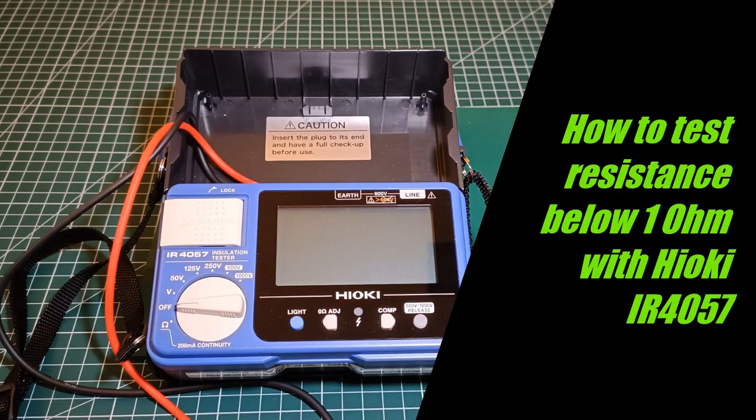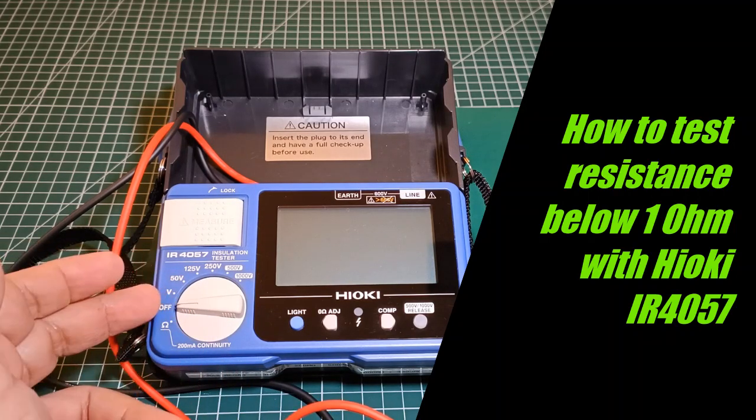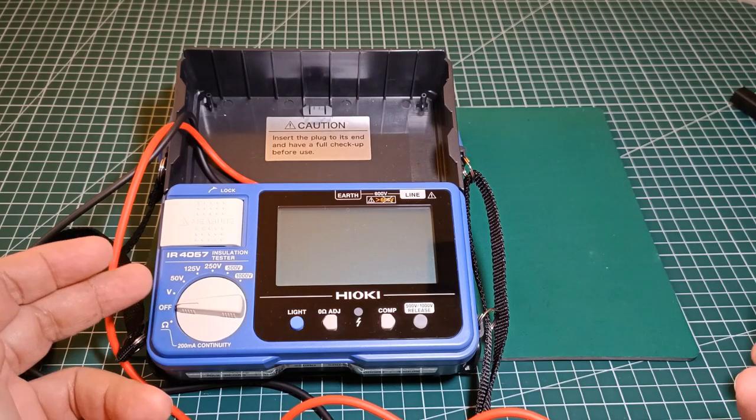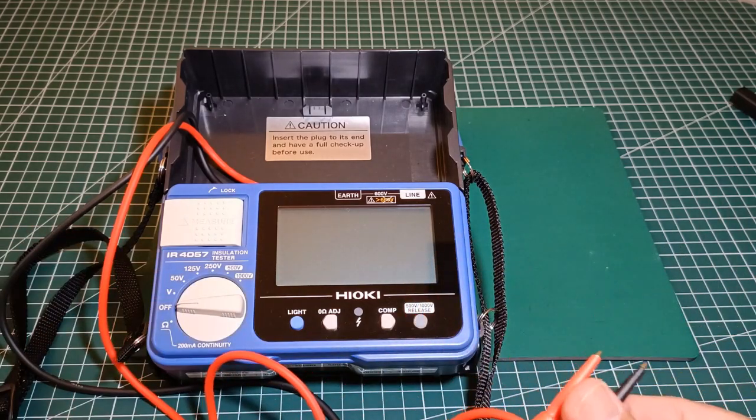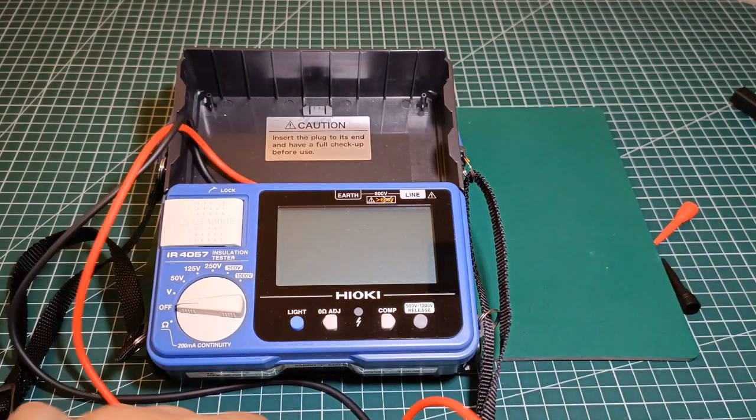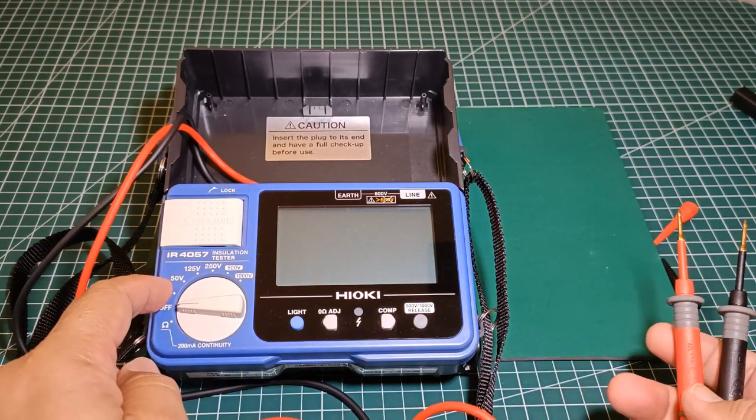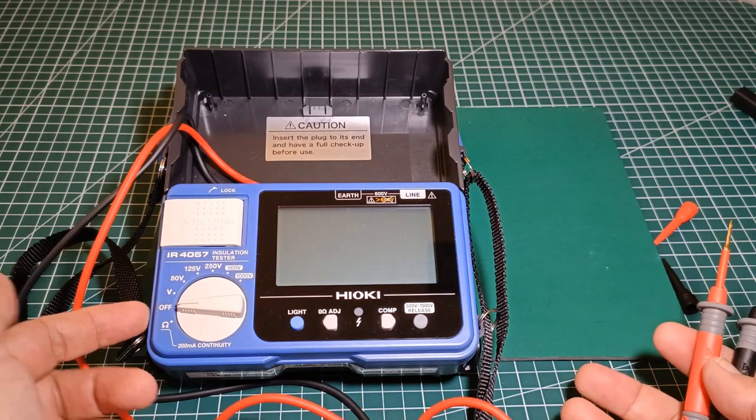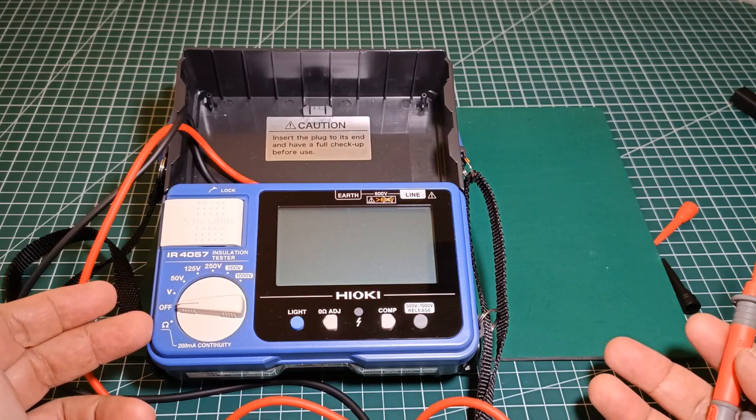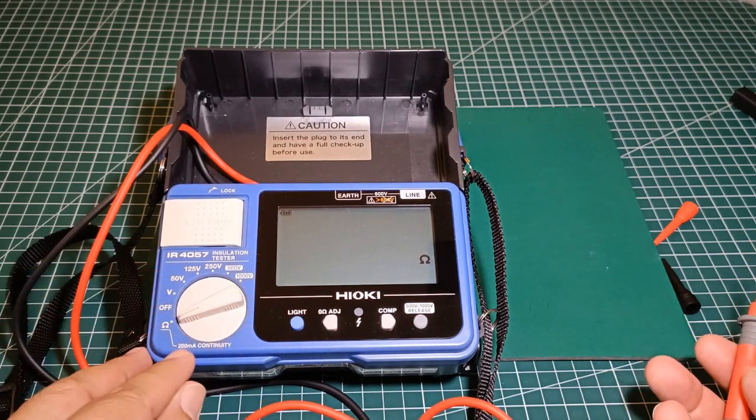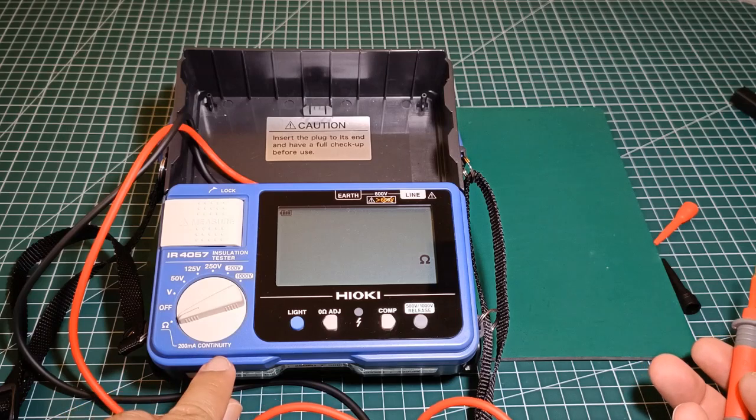Hello everyone, this is the Hioki IR4057 insulation tester. As you know, the main purpose of this insulation tester is to measure insulation resistance, of which the maximum capability of this tester is 4000 megaohms. But perhaps a lesser-known function of this insulation tester is its low resistance measurement function, here at the 200 milliampere continuity function.